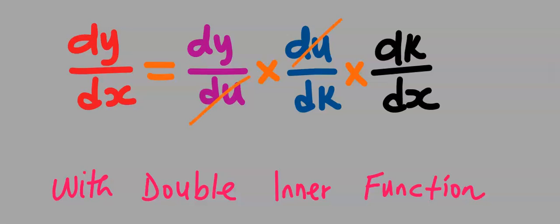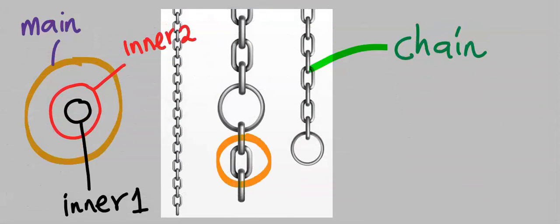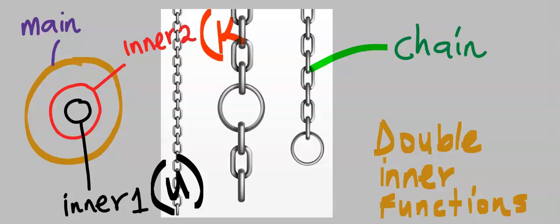If the u cancels the u and the k cancels the k, you're going to be left with dy/dx. Chain rule symbolizes a function that is chained to other functions. For double inner functions, we denote the first inner function with u and we denote the second inner function with k.